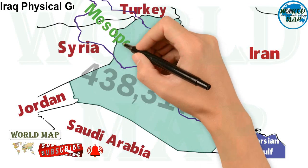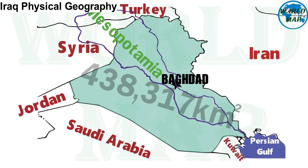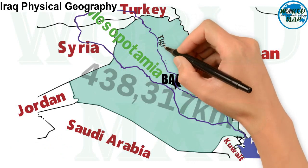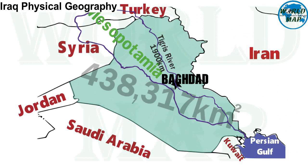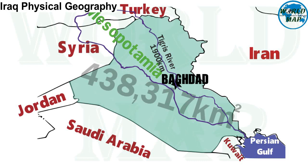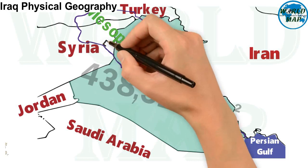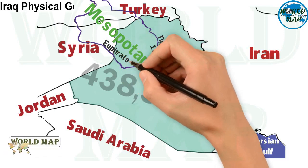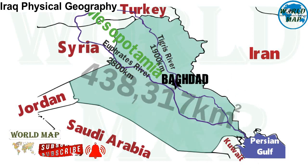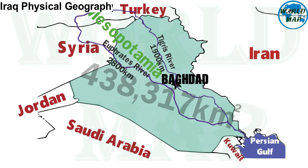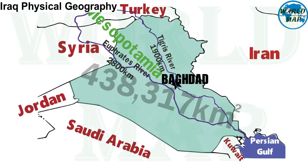Mesopotamia is the land between the Tigris and Euphrates rivers. The Tigris river is the eastern member of the two great rivers that define Mesopotamia, along with the Euphrates. The river flows from the mountains of southeastern Turkey through Iraq. The Euphrates is the longest river in southwest Asia at 2,800 kilometers long, and one of the two main constituents of the Tigris-Euphrates river system. The river rises in Turkey and flows southeast across Syria and through Iraq.